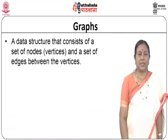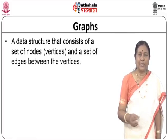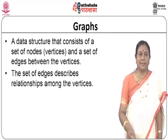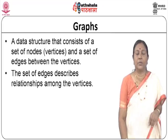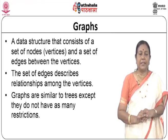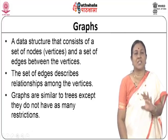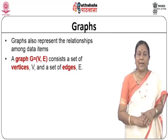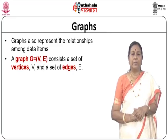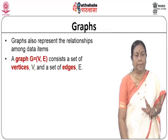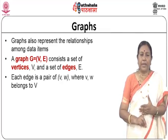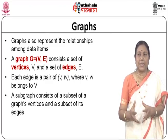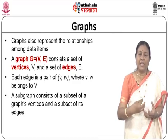A graph is a data structure that consists of a set of nodes, sometimes called vertices — both terms are used interchangeably — and a set of edges between the vertices. Edges describe relationships between vertices. Graphs are similar to trees except they do not have as many restrictions. A graph is generally represented as G = (V, E), consisting of a set of vertices V and a set of edges E. Each edge is a pair (V, W) where V and W belong to the set of vertices. A subgraph consists of a subset of the graph's vertices and a subset of its edges.